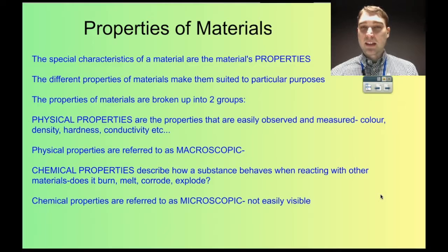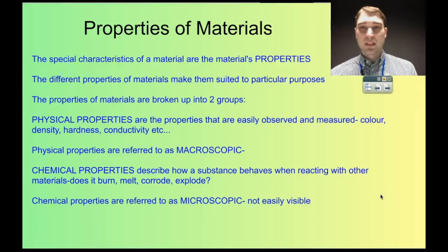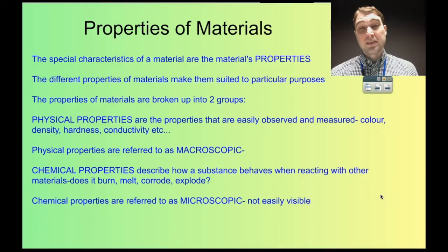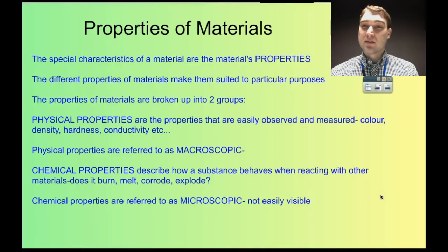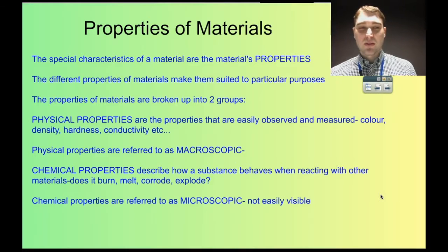Physical properties are things that we can easily see — colour, density, hardness, conductivity — and we usually call them macroscopic, which means big and easily visible. Then we have chemical properties, which are microscopic. Does it melt? Does it burn? What does it react with? They're not easily visible; you have to do experiments to see what they do. So they're microscopic properties. Today we're going to focus on the macroscopic properties.